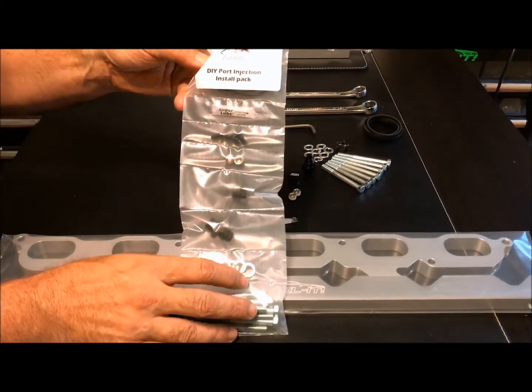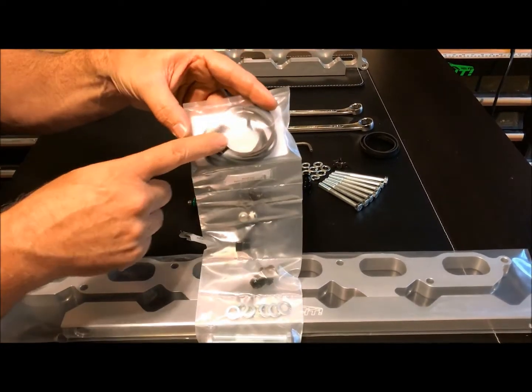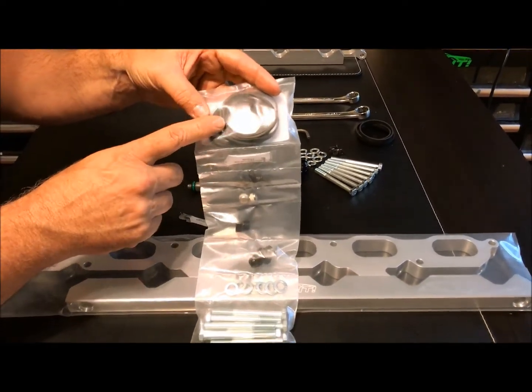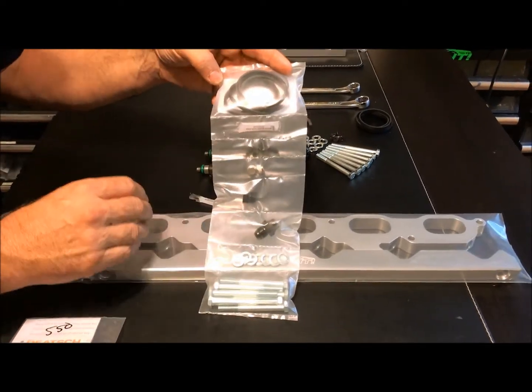Four three millimeter screws to assemble the rail, some super lube for installing the injectors, and then of course six OEM gaskets for mating the surface to the head.